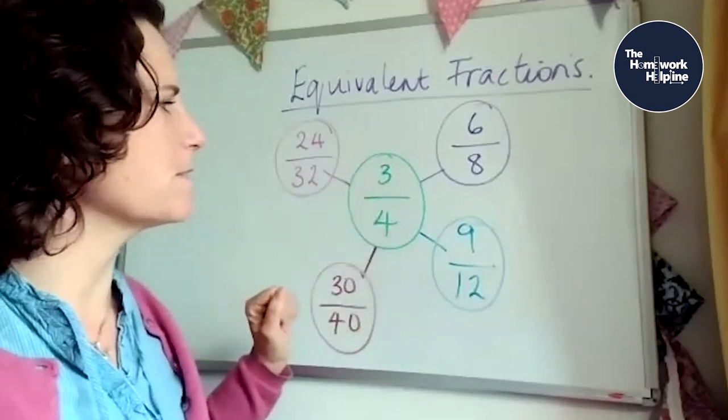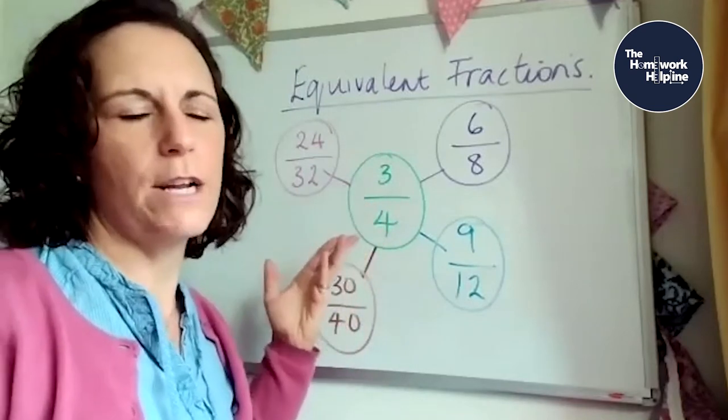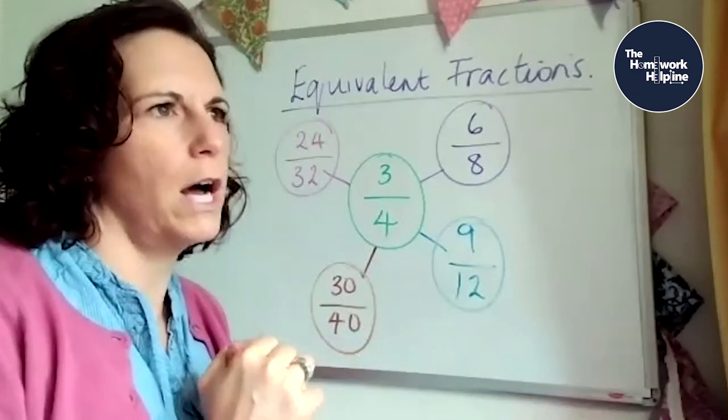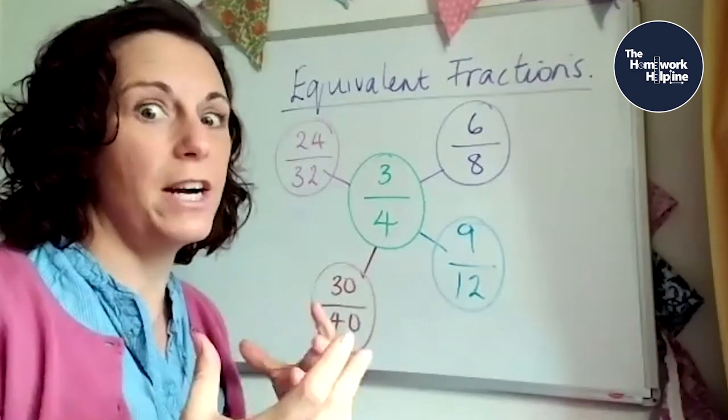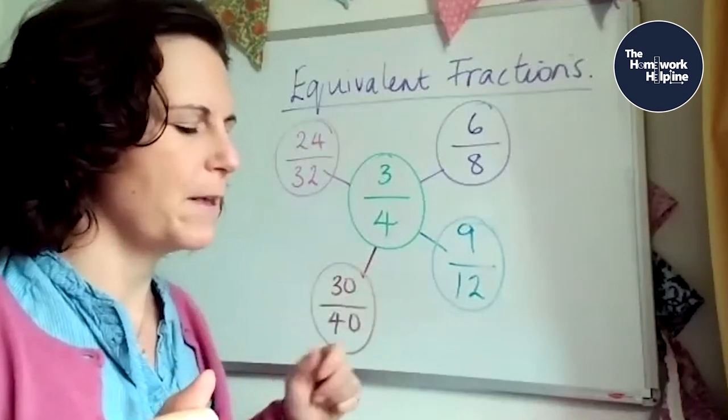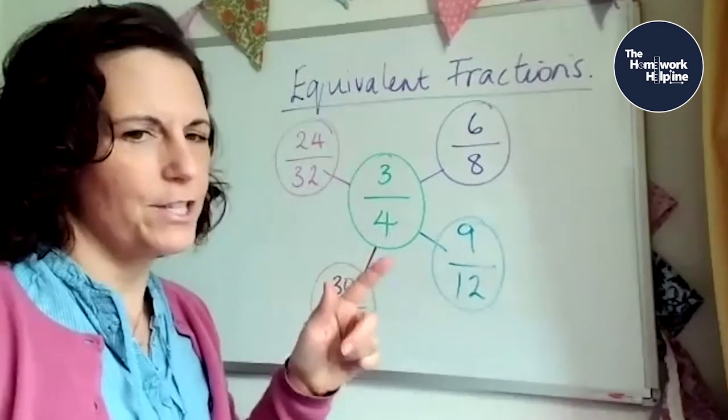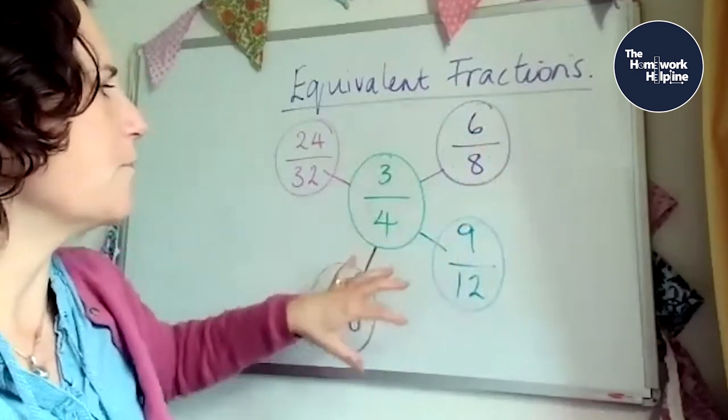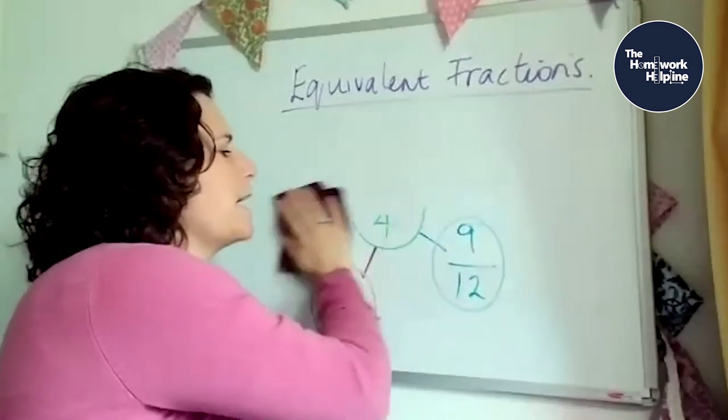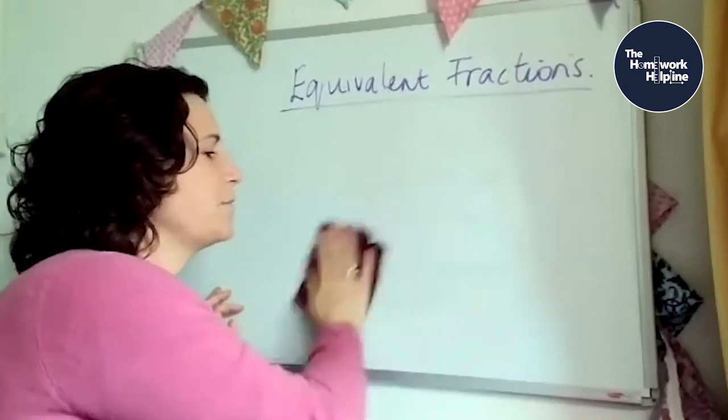Try doing it with different fractions in the middle. So try putting, instead of three quarters, try putting four fifths or seven ninths, you know, make it trickier. So if you can find all those equivalent fractions. Then, once you've worked out how to find all the equivalent fraction families, we need to do it the other way around, which is called simplifying.